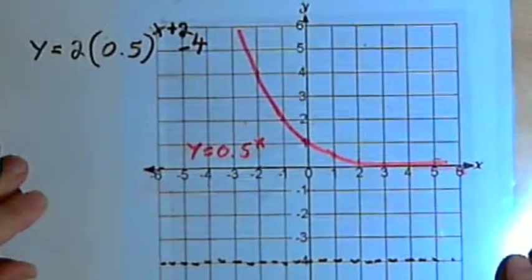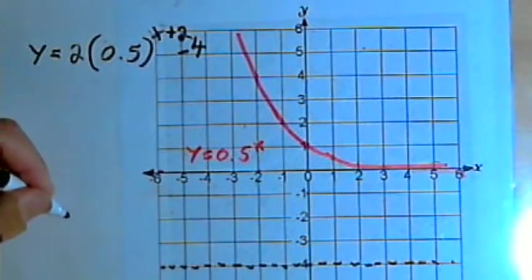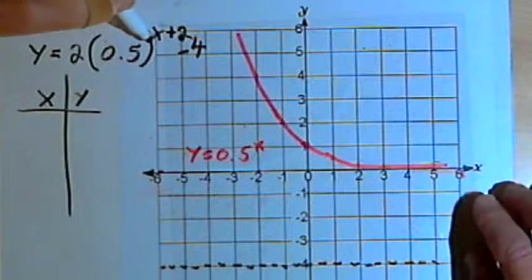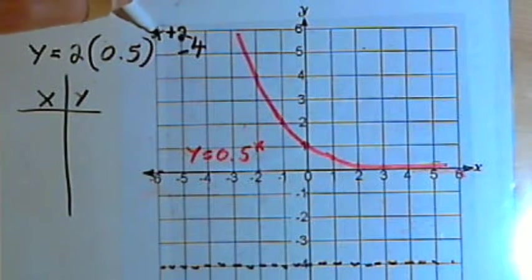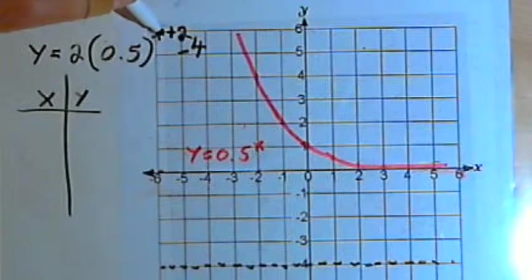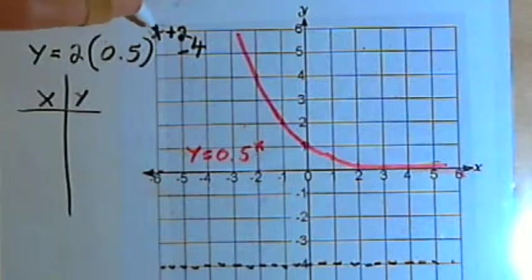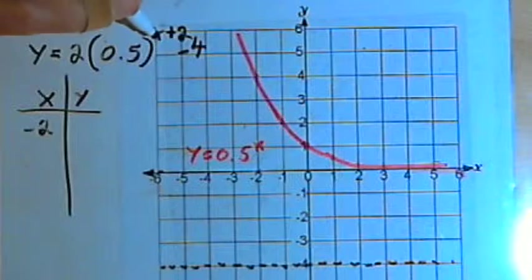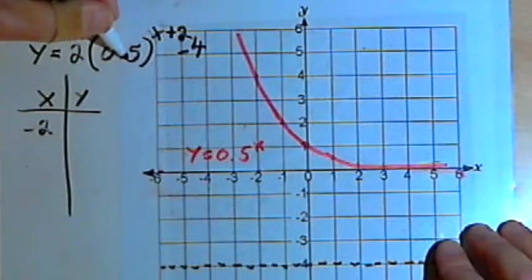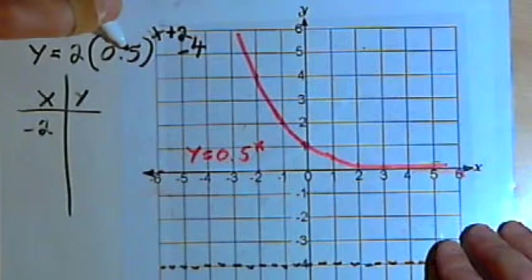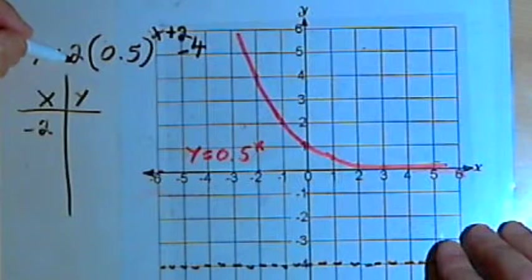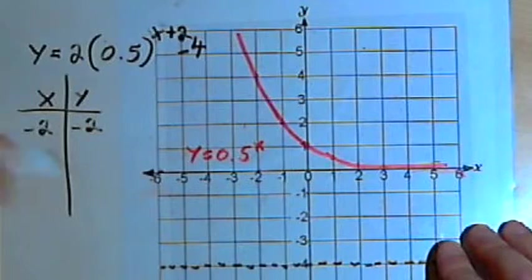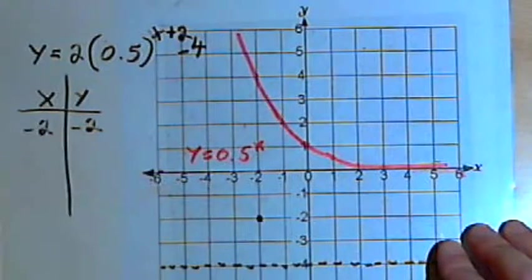Now what I find is the easiest way to do this, because it can get kind of confusing, is to make a small table of values and just find a couple of points. So I want to figure out how I can get this whole exponent, x plus 2, to equal 0. If I make the x into negative 2, then the whole exponent equals 0. I've got 0.5 raised to the 0 power, which is just a 1. I'm going to multiply that by 2, so that'll be 2. Then I'll subtract 4, so that's going to be negative 2. So I'm going to have a point at negative 2 comma negative 2.